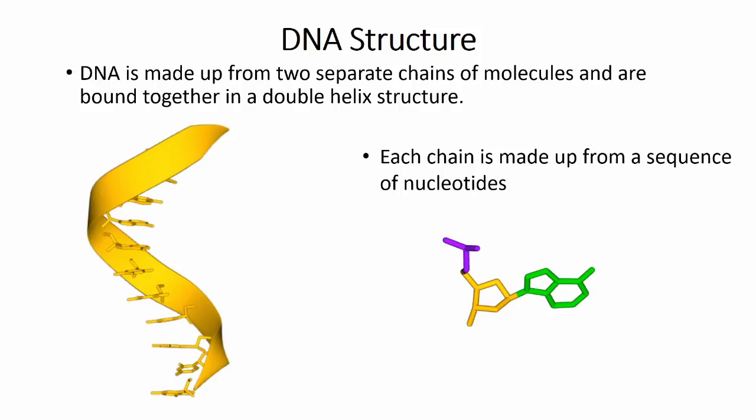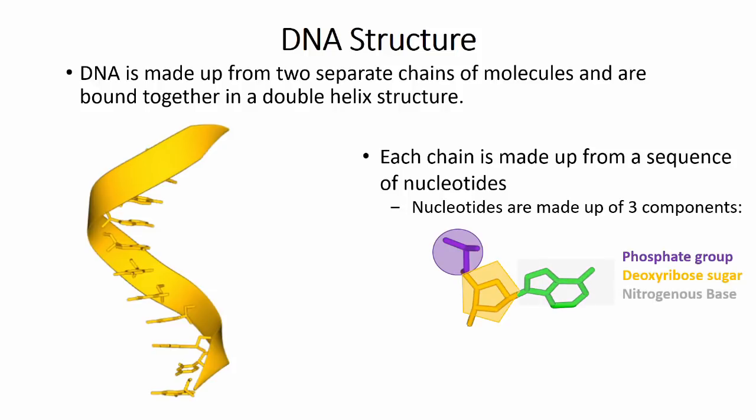A nucleotide is made up of three components: a phosphate group, a deoxyribose sugar, and a variable nitrogenous base. In DNA molecules, there are four bases that they use: adenine, thymine, cytosine, and guanine.